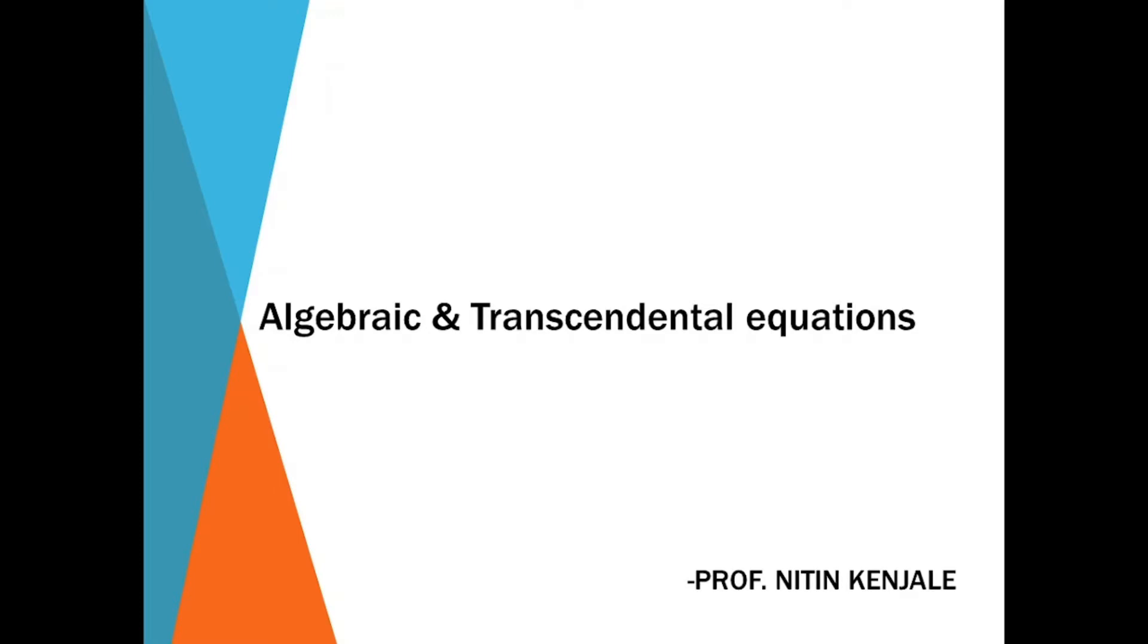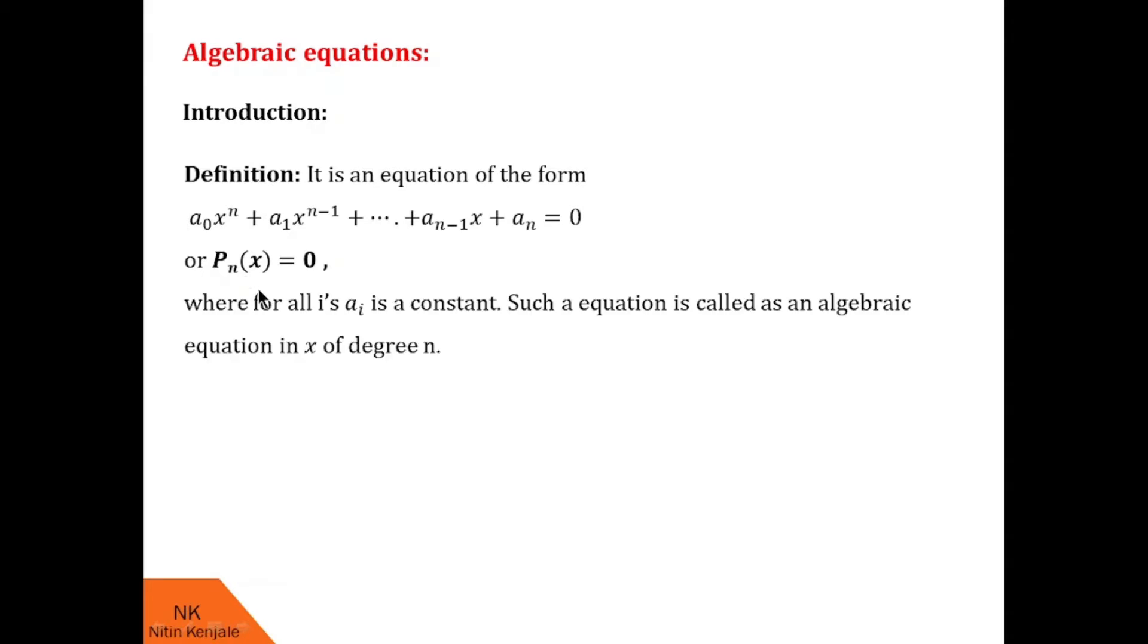Let us first see what are algebraic equations. It is an equation of the form a0x^n + a1x^(n-1) + ... + a(n-1)x + an = 0. This equation is also denoted by Pn(x) = 0, where Pn(x) is a polynomial in x of degree n. Here, for all i, ai's are constants. Such an equation is called an algebraic equation in x of degree n.